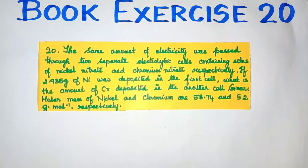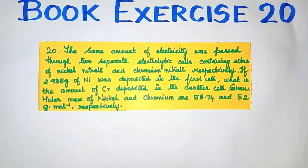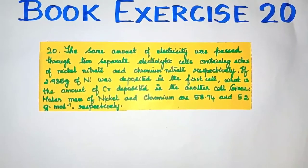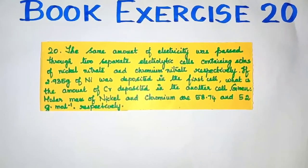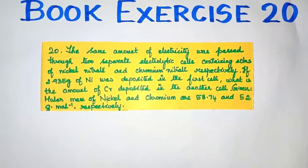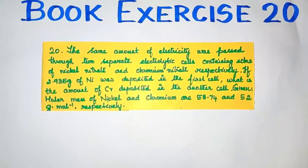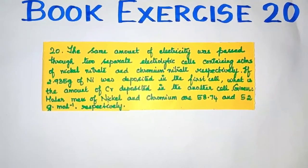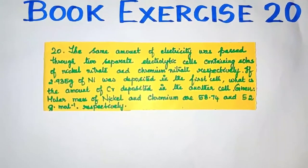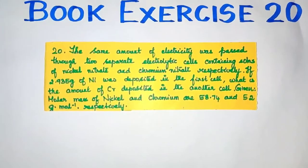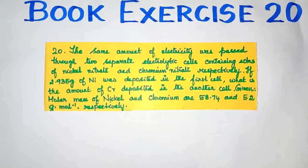So, what is the 20th question? The same amount of electricity was passed through two separate electrolytic cells containing solutions of nickel nitrate and chromium nitrate respectively. If 2.935 grams of nickel was deposited in the first cell, what is the amount of chromium deposited in the other cell? Given: molar mass of nickel and chromium are 58.74 and 52 grams per mole respectively.